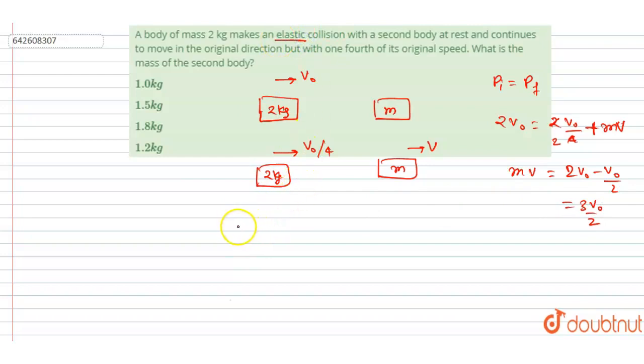the velocity of approach should be equal to the velocity of separation, since elastic collision. In elastic collision, velocity of approach and separation both are the same. So the velocity of approach is v_naught and the velocity of separation is v - v_naught/4. So from here you will get v is equal to